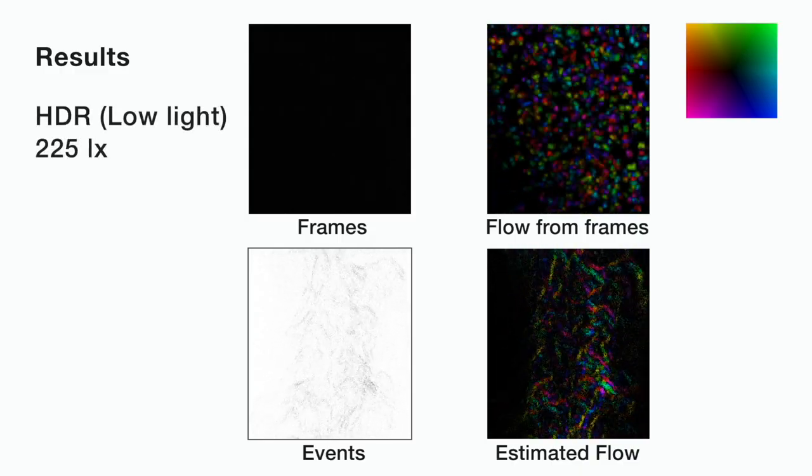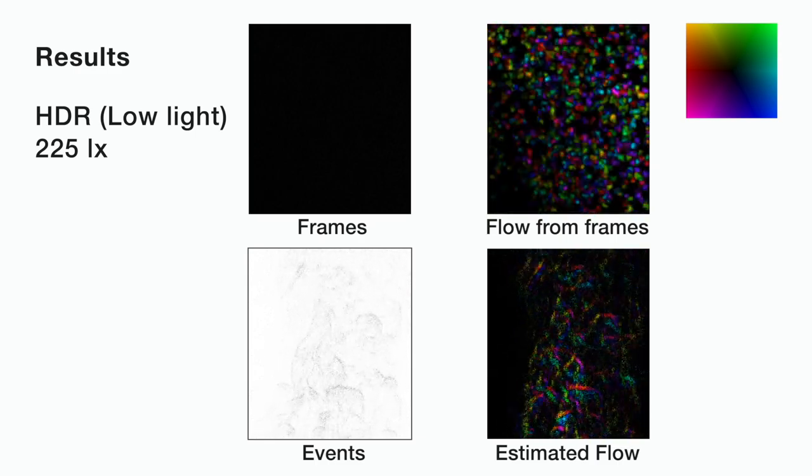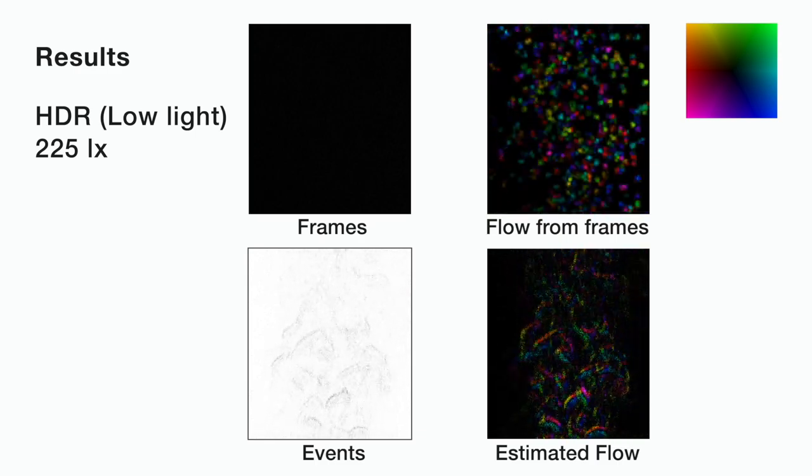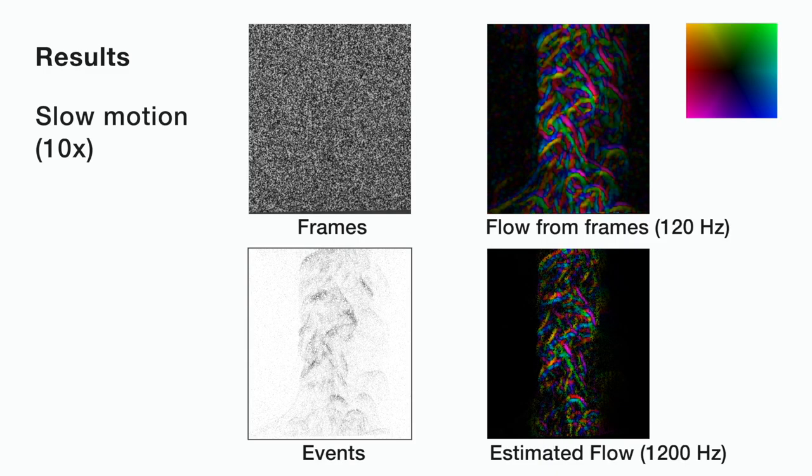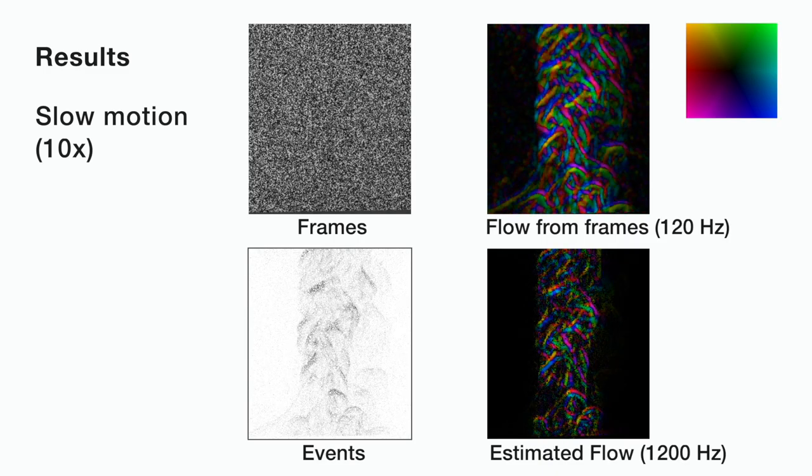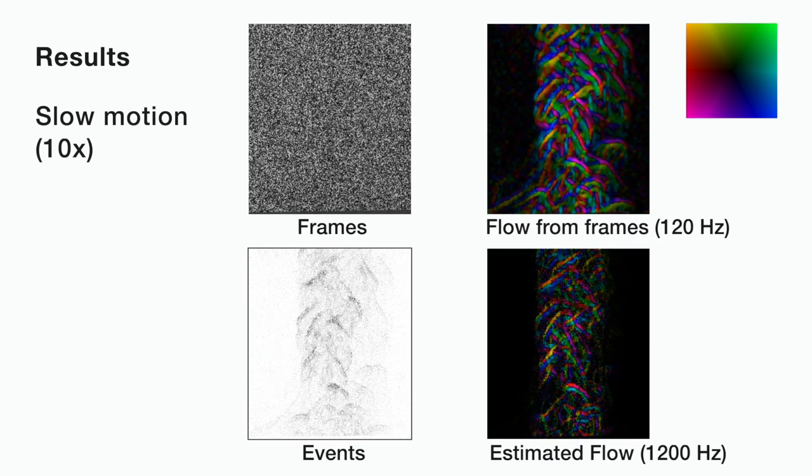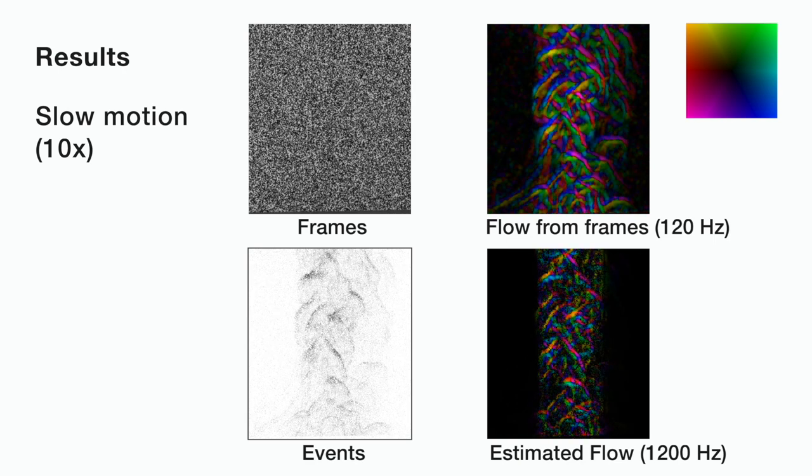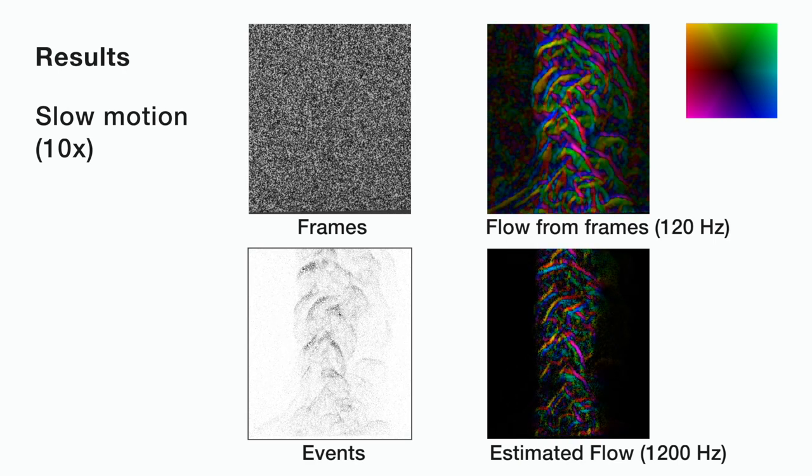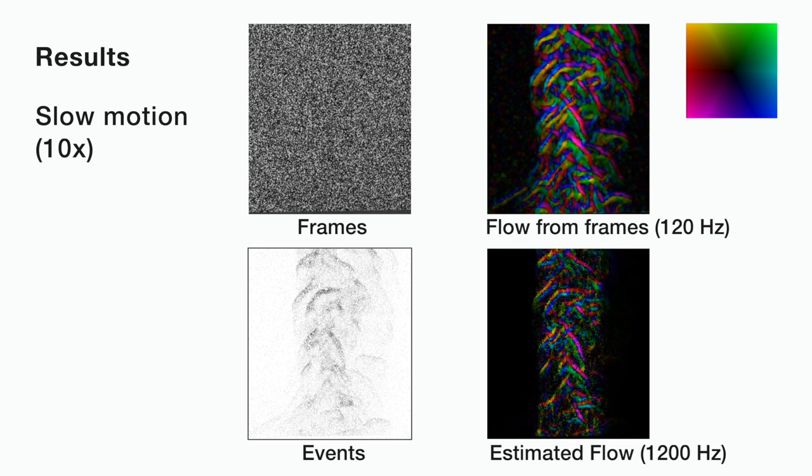In low light conditions, the frames are underexposed and therefore, frame-based BOS does not work properly. Thanks to the high temporal resolution of event cameras, we can also perform slow motion estimation. For example, we can see details at 10 times higher temporal rate than frame-based cameras.